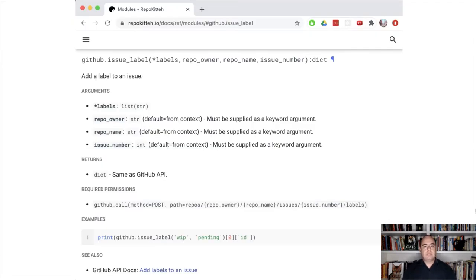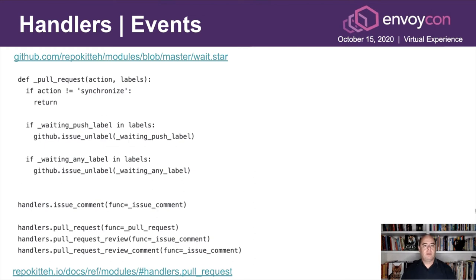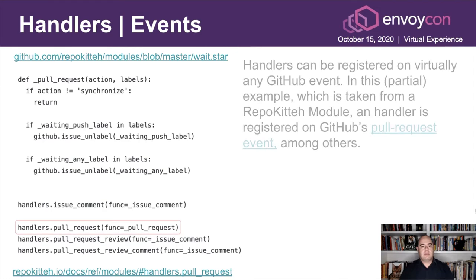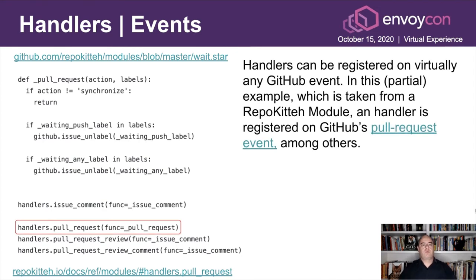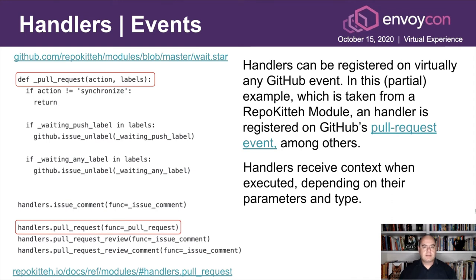This is an example of documentation from the reference manual that you can look up online. It shows you the GitHub module that has an issue label function with the description of each argument, and it can point you to the appropriate GitHub API that it actually accesses. This is an excerpt from a module supplied by RepoKitten. In this case, we register a pull request event. When we get a pull request event from GitHub, we can actually perform stuff on it. We handle the synchronized action in the pull request, and you can see that we're doing some high-level operations according to some criteria. Handlers receive context when executed — action and labels are populated dynamically depending on what parameter you specify.